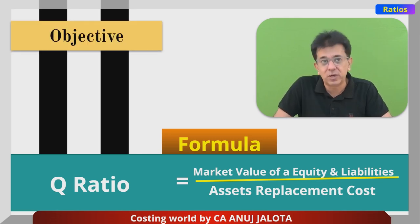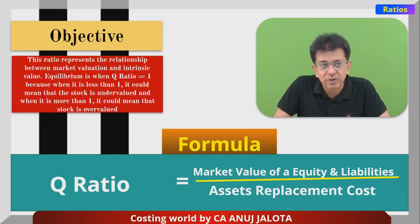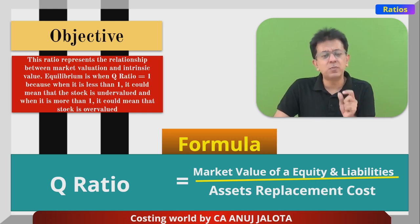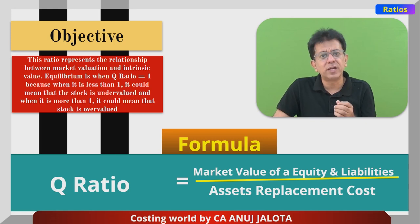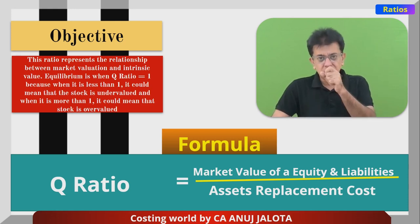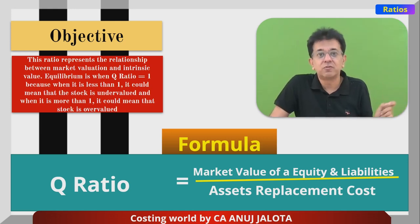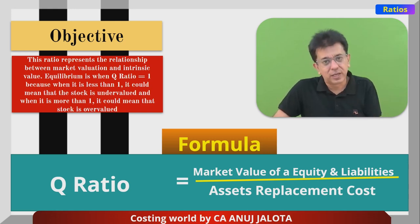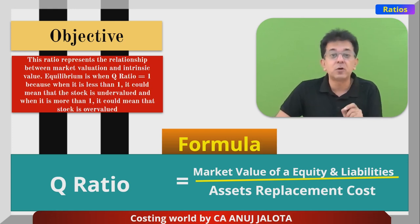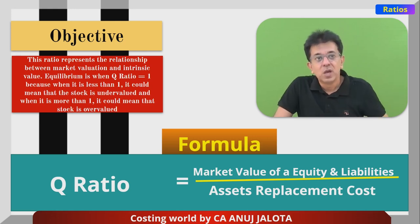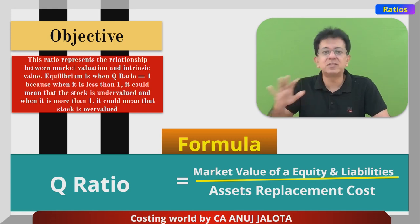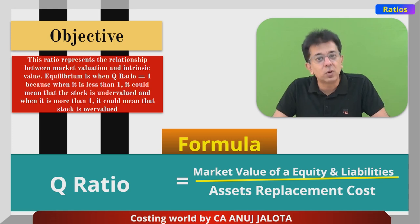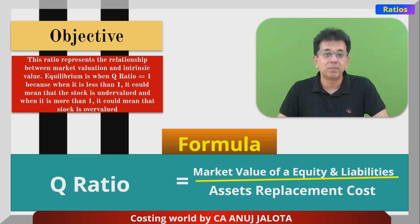James Tobin said this ratio represents the relationship between market value and intrinsic value. Intrinsic value means true worth. For example, if you purchased an asset for 5 lakh rupees many years ago but a similar asset today costs 3 lakhs, the correct value is 3 lakhs. Simply put — if you bought an iPhone last year for 1.5 lakh rupees and the same model today costs 70,000, you take 70,000 in the denominator because that represents the true worth today. He said equilibrium — balance — is when the Q ratio equals exactly 1.